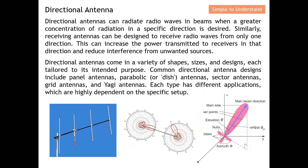A directional antenna can radiate radio waves in beams when a greater concentration of radiation in a specific direction is desired. For example, in a rural area, to receive Wi-Fi you need to point the antenna in a specific direction toward where the signal is broadcast, in order to have the best chance of receiving the signal with the highest gain.